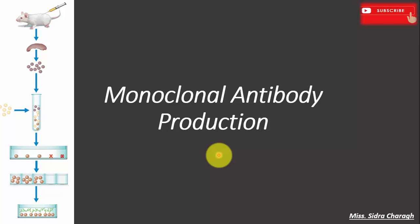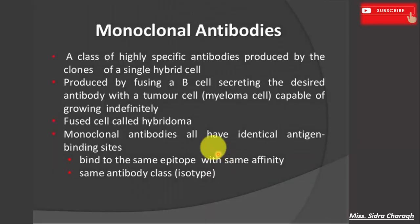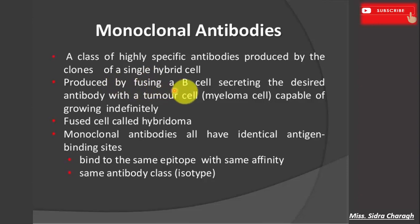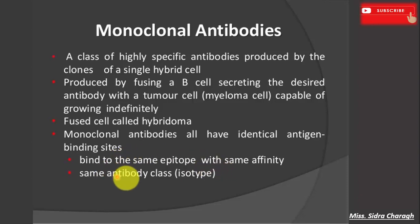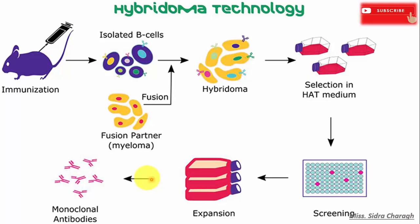In this lecture we will talk about monoclonal antibodies production. Monoclonal antibodies belong to a class of highly specific antibodies that are produced by the clone of a single hybrid cell. They are produced by fusing a B cell that secretes the desired antibody with tumor cells called myeloma cells. The hybridoma cells that result have identical antigen binding sites, bind to the same epitope with the same affinity, and belong to the same antibody class.